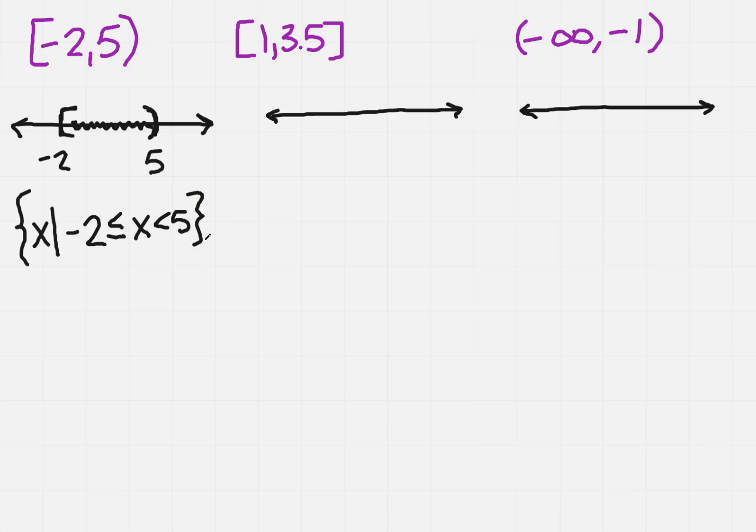So let's try the next one. I've got a 1, it's a bracket, and I've got a 3.5, and it's a bracket. Now to make sure that you can see where I'm shading, you're shading in the middle here, so it's in between. So that's where x lies, is between those two.